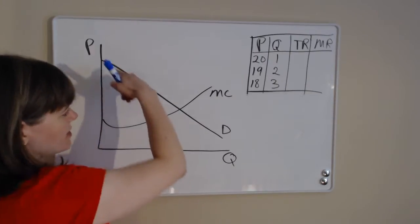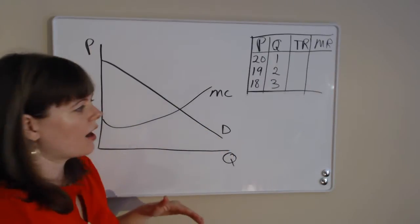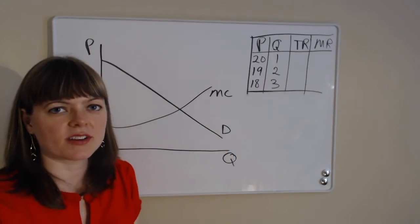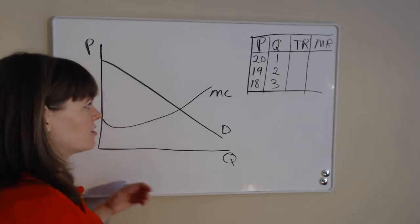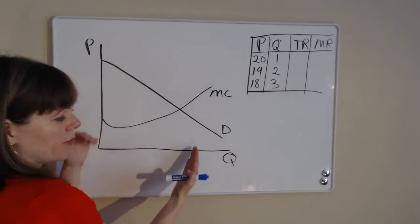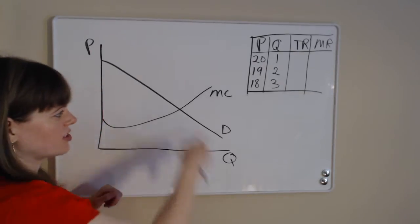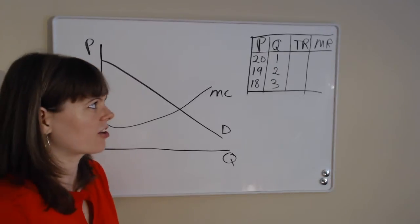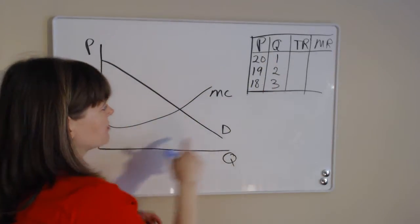And we've got a demand curve, which is simply a relationship between price and quantity that people will demand. So if you raise the price, people are going to demand fewer of a product. That's all that's captured in a demand curve.